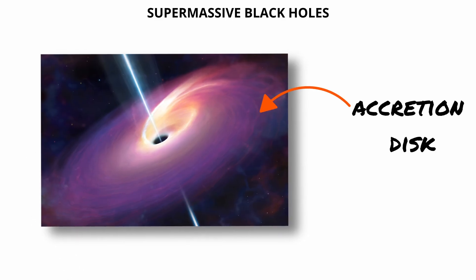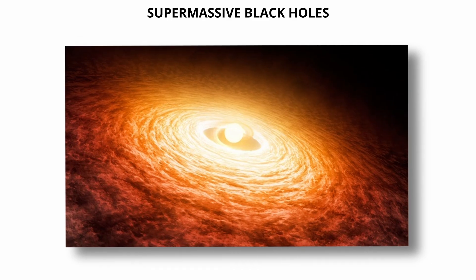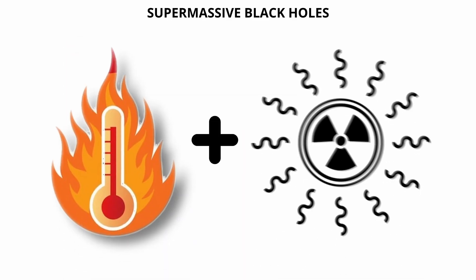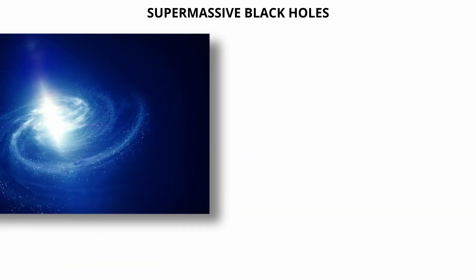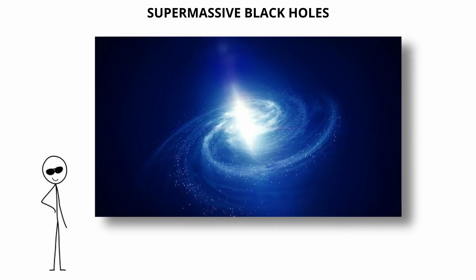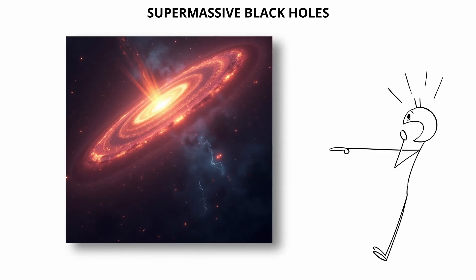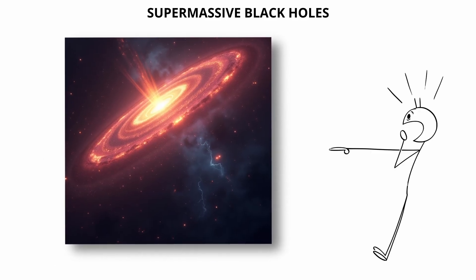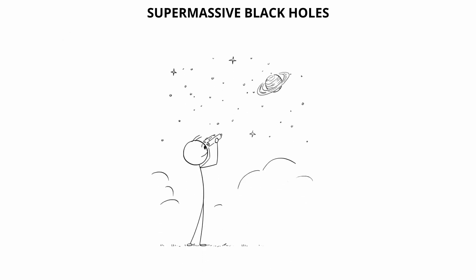The area around them may form an accretion disk, a swirling ring of infalling material that becomes superheated and emits powerful radiation. This process can power quasars, some of the brightest objects in the universe, which are thought to be supermassive black holes actively consuming matter at high rates.